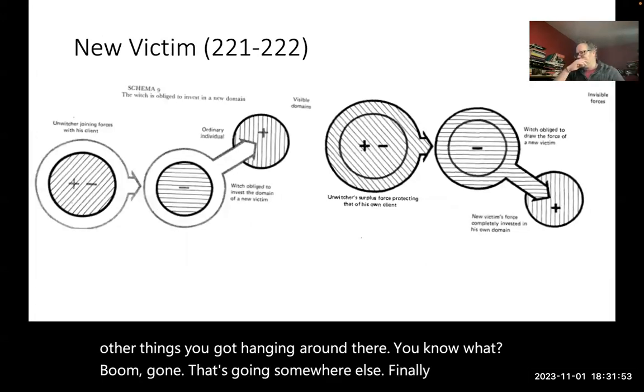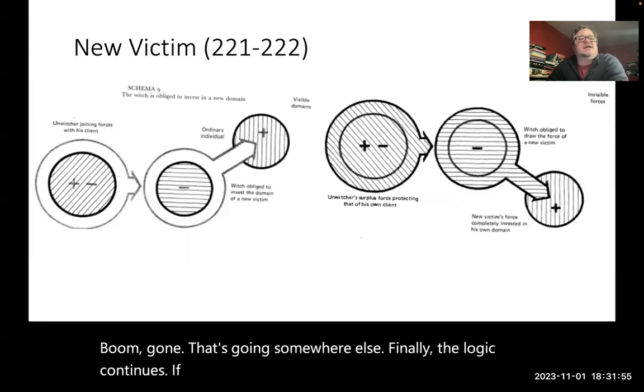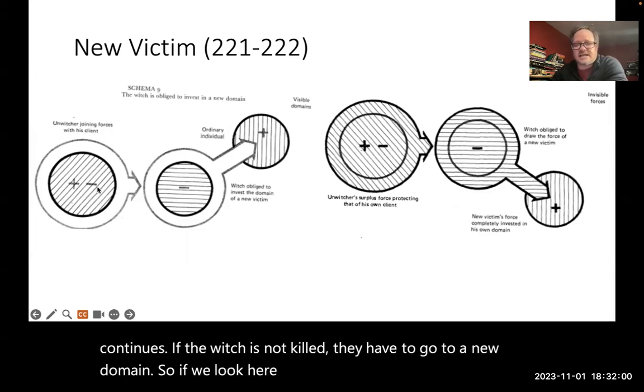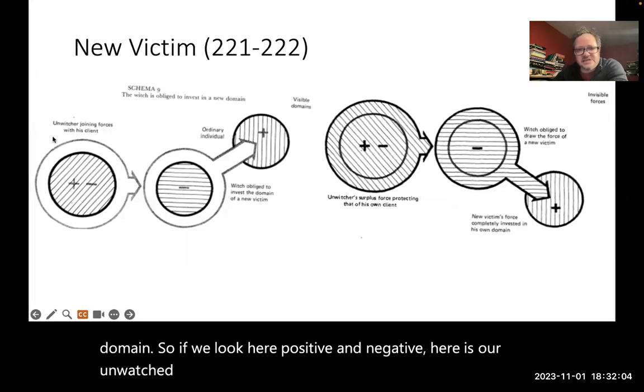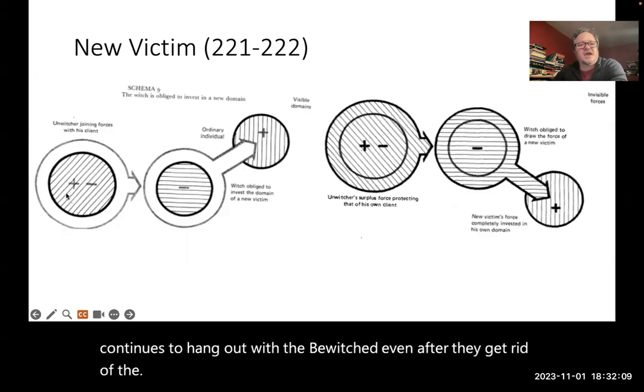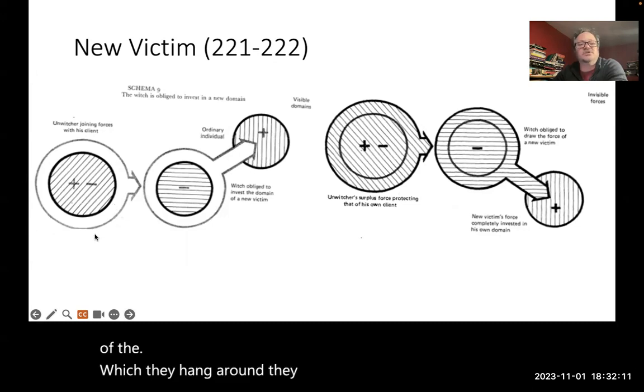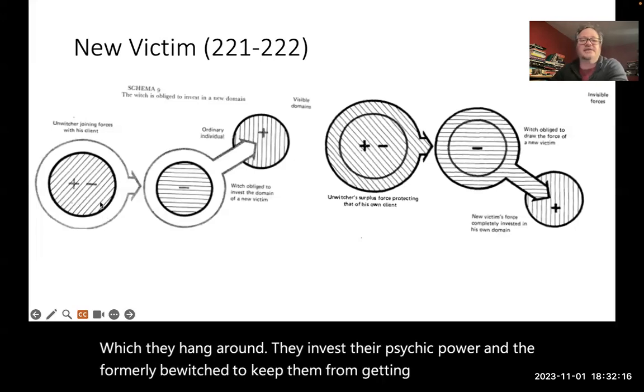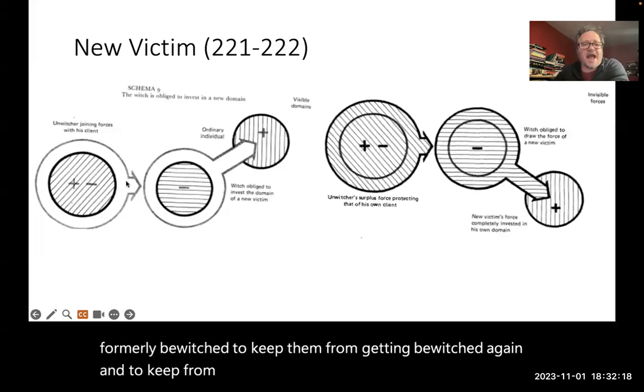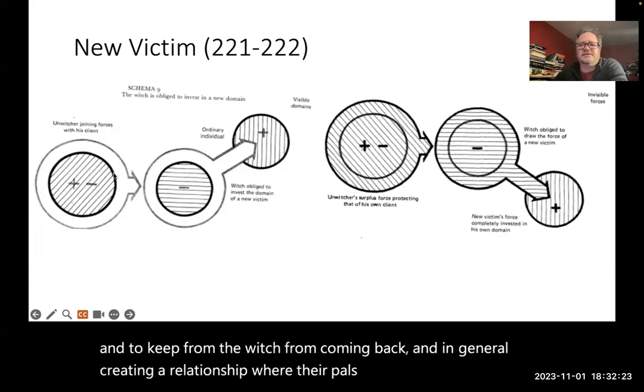Finally, the logic continues. If the witch is not killed, they have to go to a new domain. So if we look here, positive and negative. Here is our unwitcher who continues to hang out with the bewitched. Even after they get rid of the witch, they hang around, they invest their psychic power in the formerly bewitched to keep them from getting bewitched again and to keep the witch from coming back. And in general, creating a relationship where they're pals and the previously bewitched continues to pay them.